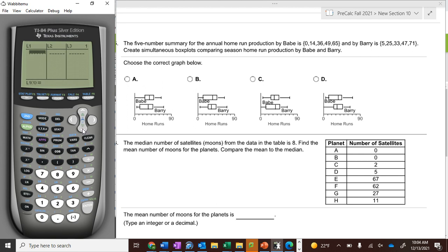Babe Ruth, one year he hit zero home runs. His first quartile average is 14 home runs, his median number of home runs is 36, his third quartile is 49, and then 65 is his max that he hit in a season.